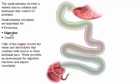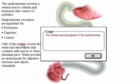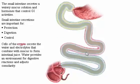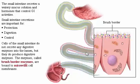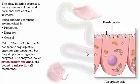Cells of the crypts secrete the water and electrolytes that combine with mucus to form intestinal juice. Water provides an environment for digestive reactions and adjusts osmolarity. Cells of the small intestine do not secrete any digestive enzymes into the lumen, but they do produce digestive enzymes. These enzymes, called brush border enzymes, are bound to microvilli cell membranes. We have already encountered the brush border enzyme enterokinase, which activates trypsinogen.